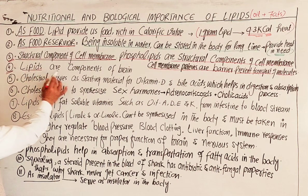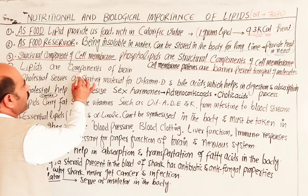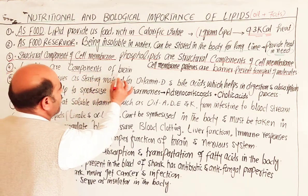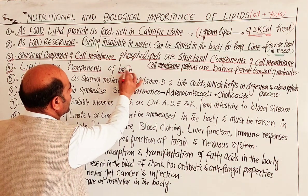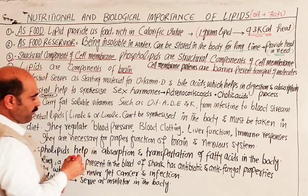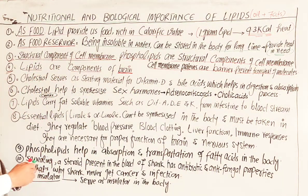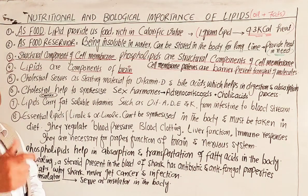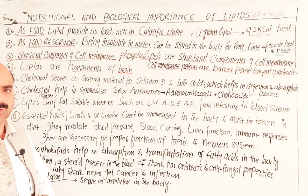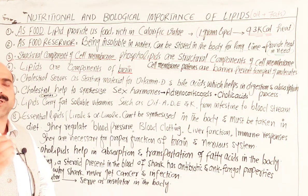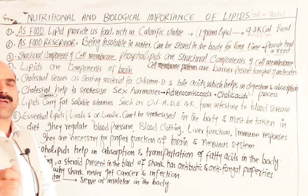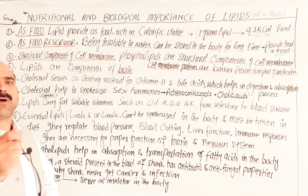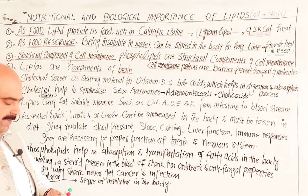Fourth: lipids are components of the brain. Lipids are a component of brain formation — the brain contains lipids. They also protect the brain from shock and jerk.